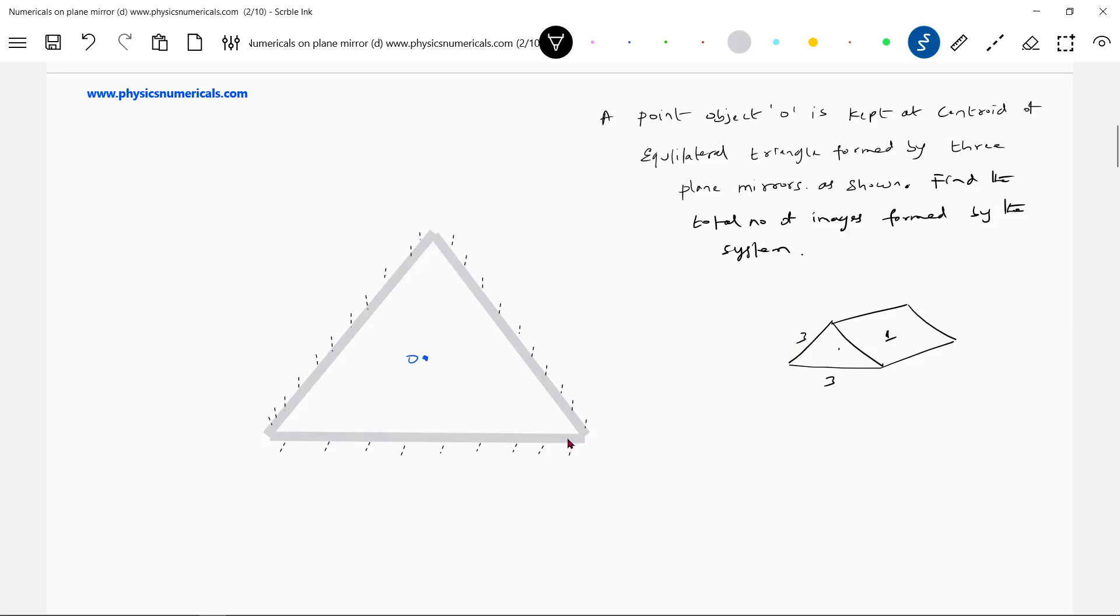An object is kept somewhere at the centroid, so a plane diagram is what I'm showing. So this will be practical. Now how many images will be formed? Again, what is the angle between them?